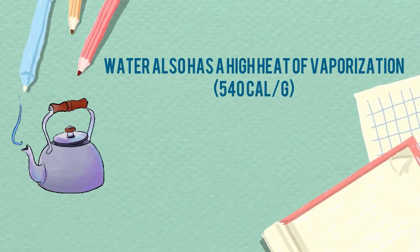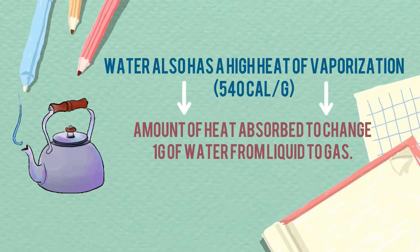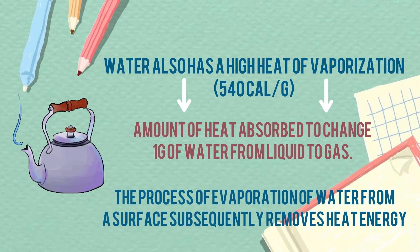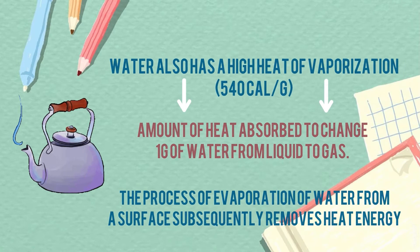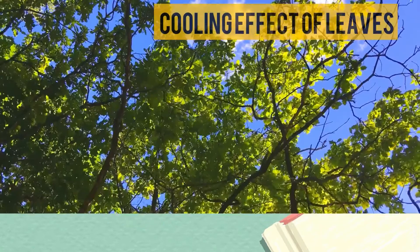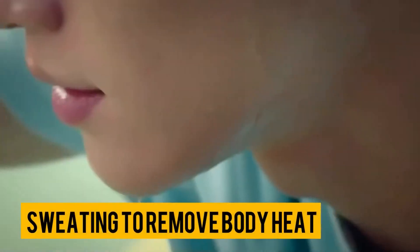Water also has a high heat of vaporization, valued at 540 calories per gram. This property refers to the amount of heat absorbed to change one gram of water from liquid to gas. The process of evaporation from the water surface removes heat energy, causing the cooling effect seen in leaves and sweating to remove body heat.